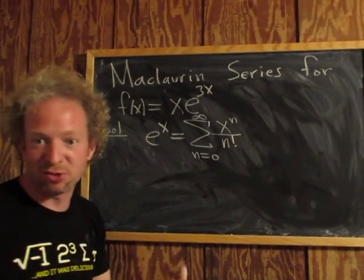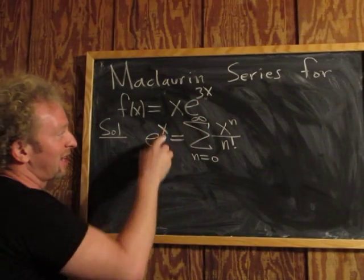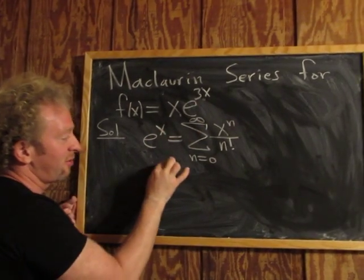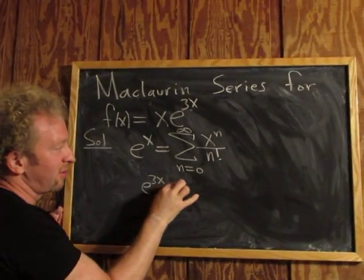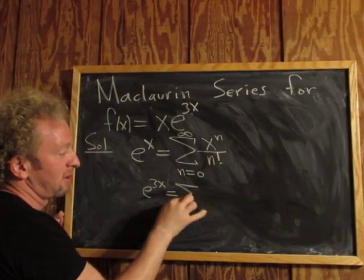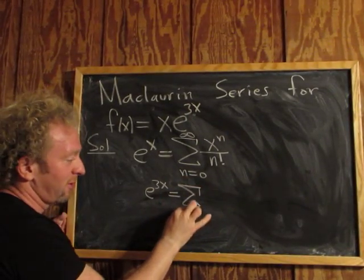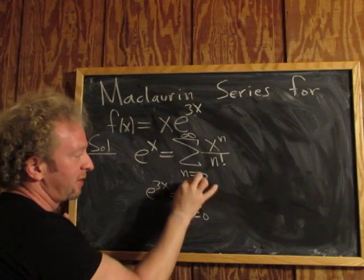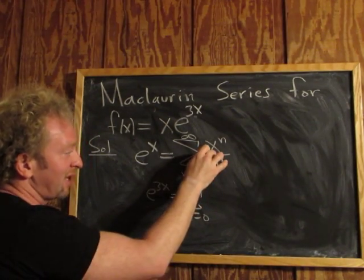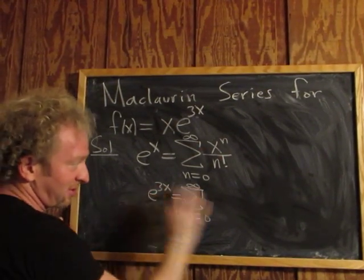So we'll start by doing it in pieces. We'll start by plugging in 3x where we see an x. So e to the 3x is equal to the infinite sum as n runs from 0 to infinity. And then we're replacing the x with 3x. We can do that because it converges everywhere.